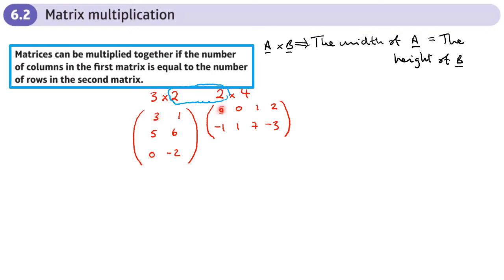Multiplication is not the same as addition where we just add each element to each other. The first thing we do is 3 times 5, then we go across to 1 but down to negative 1, so we do 3 times 5 plus 1 times negative 1. That goes in the first row, first column. Then 3 times 0 plus 1 times 1, which is 1, goes in the top row second column. And 3 times 1 plus 1 times 7, which is 10, goes in the top row third column.